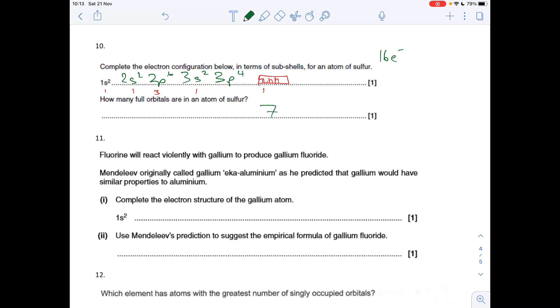Next question: gallium's got 31 electrons, so there is its electron configuration. We've got to use Mendeleev's prediction to suggest the empirical formula of gallium fluoride. Gallium is in group three, just like aluminum, so it will form a Ga3+ ion. The fluoride ion is one minus, so it's going to be GaF3.